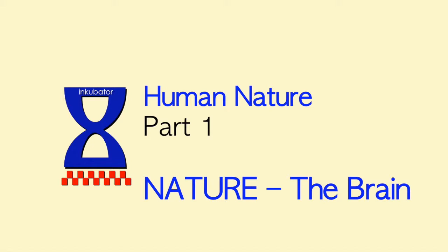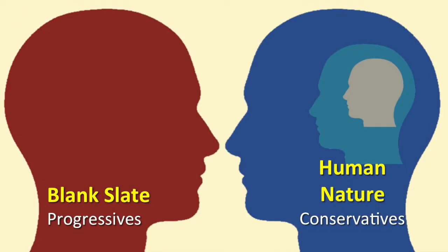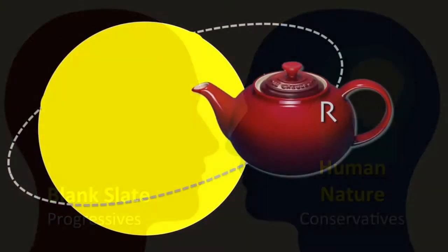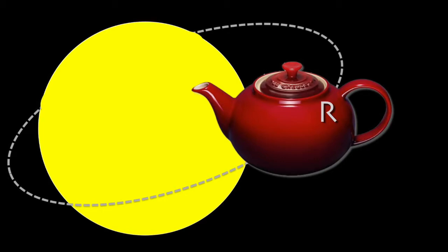Our first step in the investigation will be to look at the hardware which might create human nature — the brain. Many progressives believe that there is no such thing as human nature, that we are born with a blank slate and that our nature is malleable. Because we are malleable, the theory goes, with the right type of education and control, the social engineers can turn us into a new man ready for utopia. I have no idea how to prove that human nature does not exist — how do you prove a negative? So I'll focus on showing reasons why I believe that human nature does exist. By the way, that's Russell's teapot, orbiting the sun.